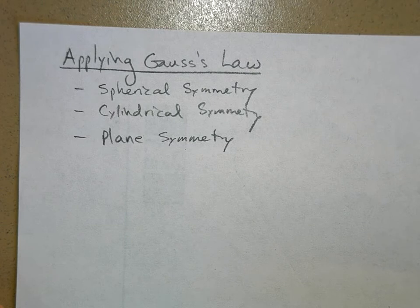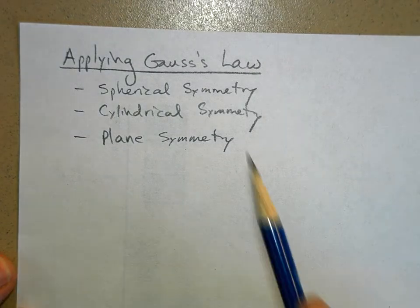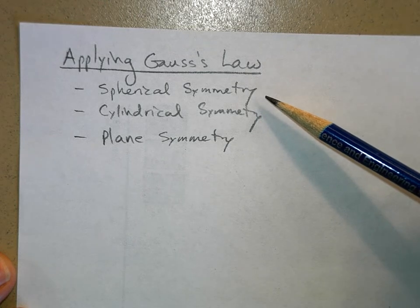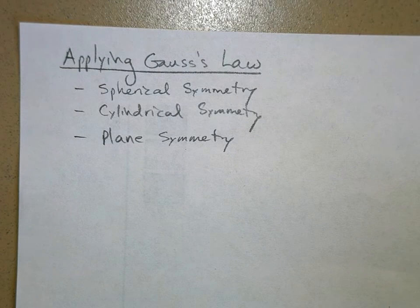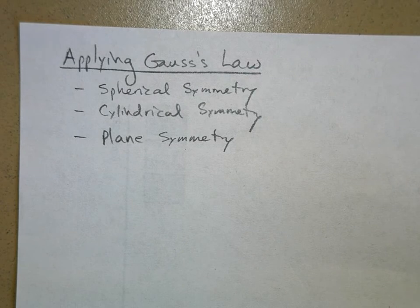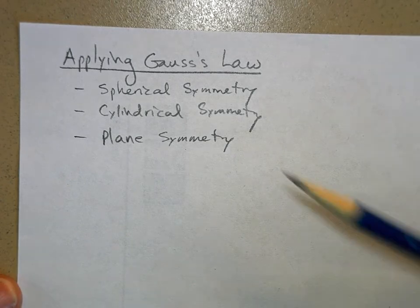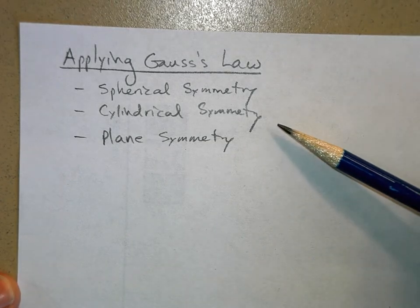There are three basic charge distributions you have to know how to handle. First, spherical symmetry — the charge is distributed in a spherical way, either as a point charge, a uniform sphere, or a spherical shell, where the electric field spreads out in three-dimensional space. Or you could have a cylinder.